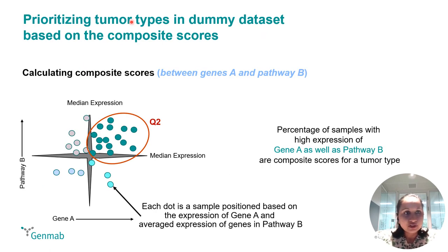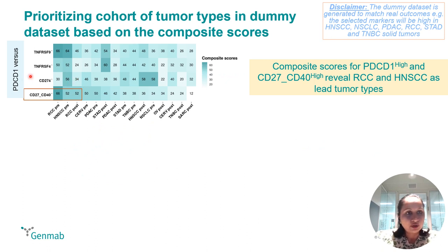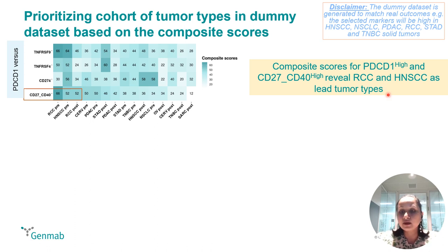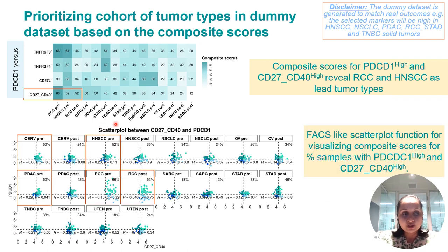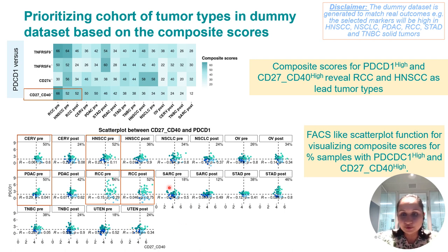The unique functionality that VIBE offers is composite scores, where we can look at the percentage of samples with high expression of a gene and the average expression of a gene signature — which we call composite scores. So if we look at it in a heatmap format, we can pick up the tumor types which have high expression of PDCD1, CD27, and CD40. Here we can easily pick kidney and head and neck as lead tumor types because they have a higher percentage of cells with high expression of both PDCD1 and CD27 and CD40. Furthermore, we can look into the scatter plot of each of these tumor types plus treatment information separately, so that we can pick the correct cohort of samples and understand how the data points are distributed among four quadrants.